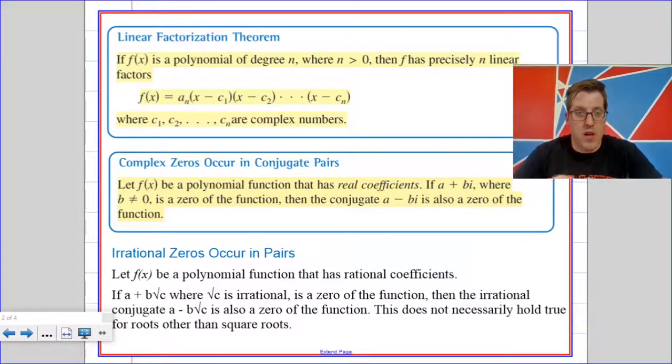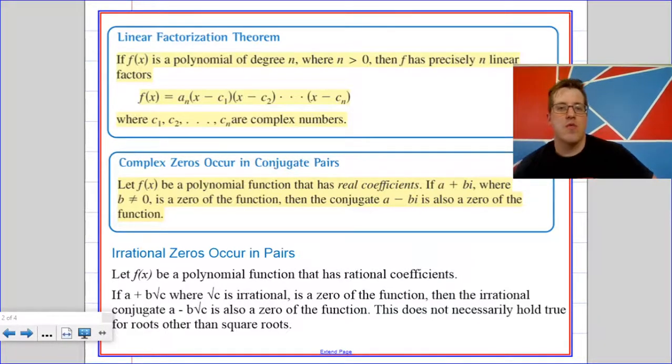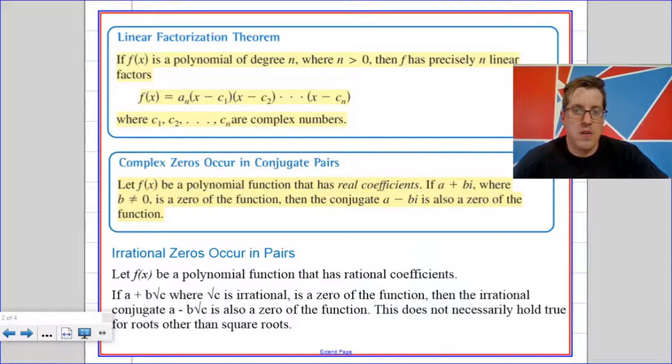Okay, from yesterday, complex zeros occur in conjugate pairs. If 1 plus 4i is a zero, then 1 minus 4i has to be a zero. And irrational zeros that have square roots in them are also going to appear in pairs. So if 1 minus the square root of 5 is a zero, 1 plus the square root of 5 is going to be a zero. Basically, what this is going to do is it's going to cut your work in half. If you're able to find that 2i is a zero, then you know for sure that negative 2i is a zero.